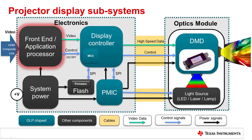The front-end application processor receives video from industry standard interfaces such as HDMI, composite, VGA, and so on. It also decodes and converts this video as input for the DLP chipset.